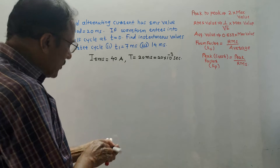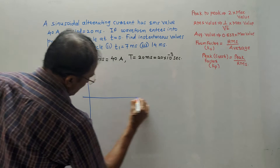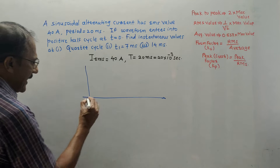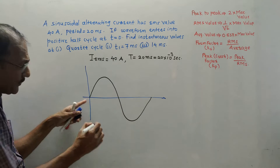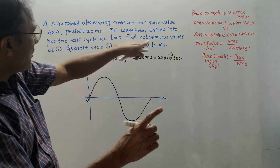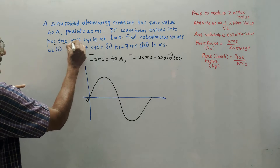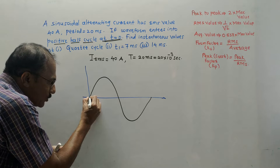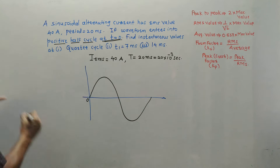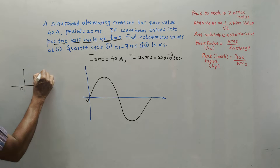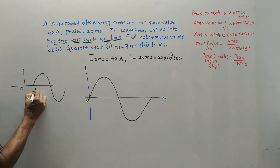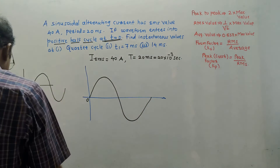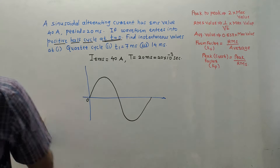The first step is to draw the diagram. Since the question mentions sinusoidal, I draw a sine wave. The waveform enters the positive half cycle at t = 0, so I start the positive half cycle from the origin. If any waveform starts from a different point, say π/3, that distance is known as a phase shift. Presently there is no phase shift, so the waveform starts from the origin.